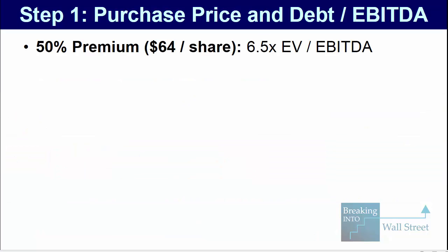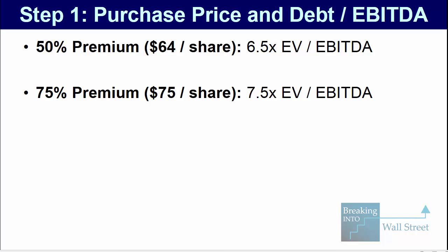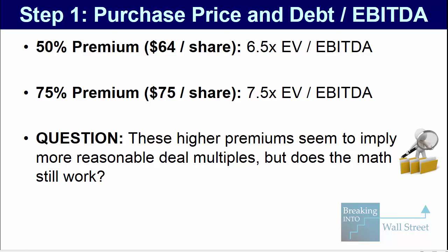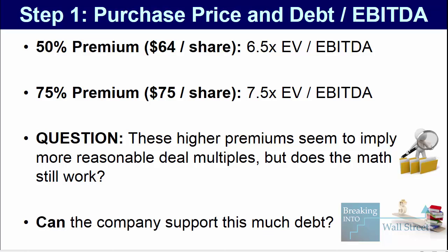If you go with a 50% premium, that takes you to $64 a share and a 6.5x EV/EBITDA multiple. A 75% premium takes you to $75 a share and around a 7.5x EV/EBITDA multiple. These multiples seem more in line with other deals in the sector and more reasonable, but we don't know if the math works. We need to go in and see just how much debt the company can support at these levels — if we pay 7.5x EBITDA, can they support 5 or 6x EBITDA for the debt level? That is what we have to check.